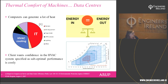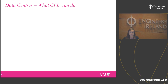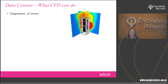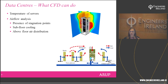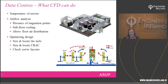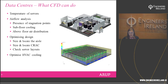Our clients want confidence that the data centre and the HVAC system specified will perform optimally. With CFD we can look specifically at server temperatures, how they heat up and cool down, whether there are stagnation points with very hot or very cold zones and insufficient mixing. We can examine where cooling units and floor grills are placed, and ultimately optimize the cooling system for a particular data centre design.